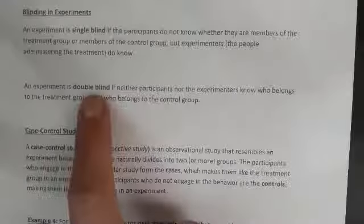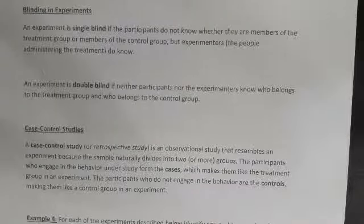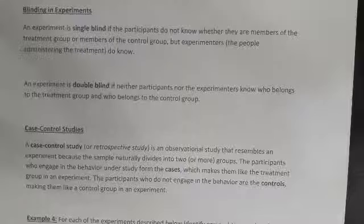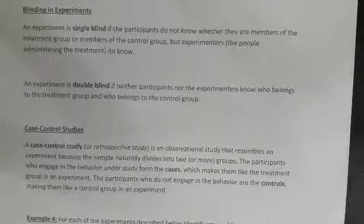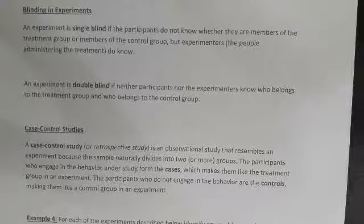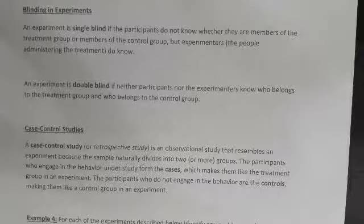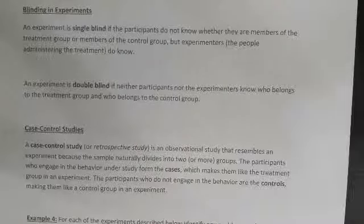In a double-blind study, there's a random code used to separate the pills, perhaps given to someone else without telling them which is placebo and which is real. This separates our personal influences from the experiment, because if the person giving the pill knows which is which, they can inadvertently reveal it through non-verbal body language, ruining the placebo effect.